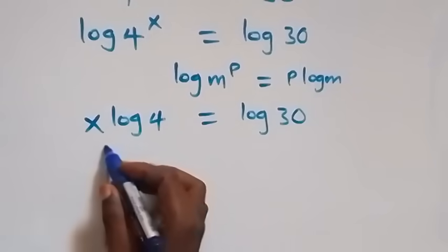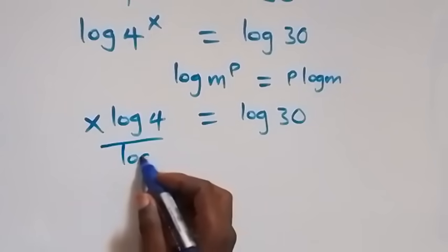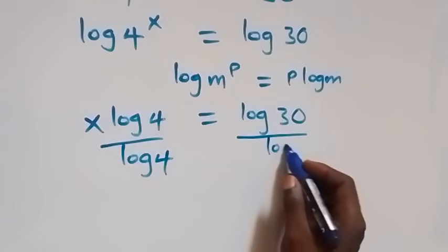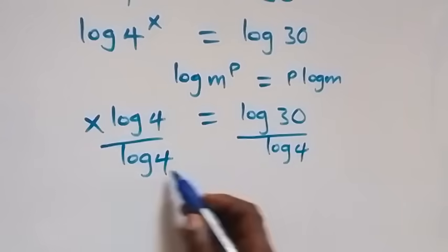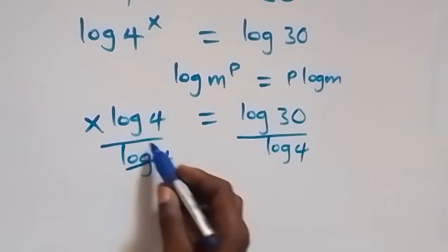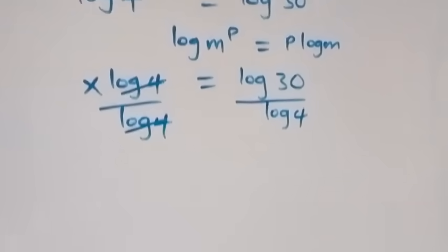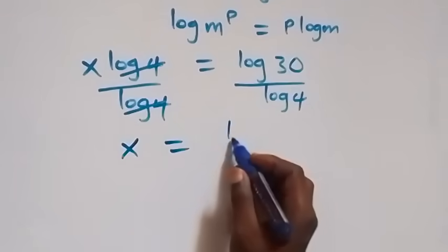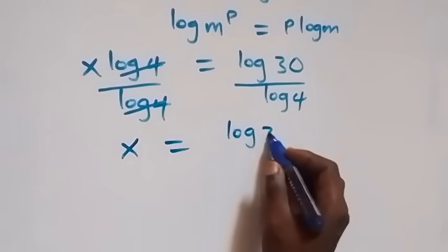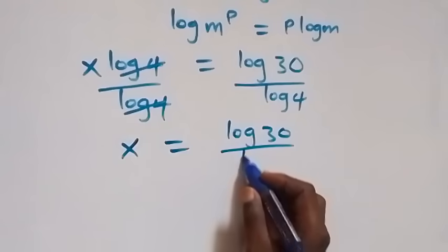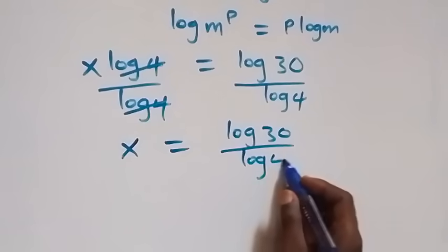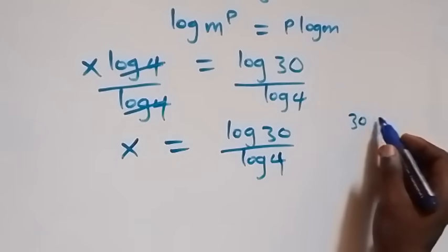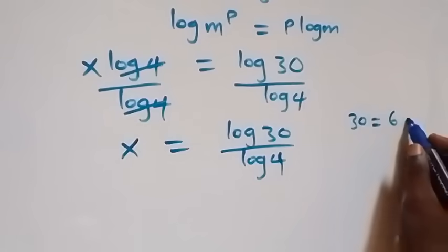The next step is to divide both sides by log 4. We divide this side by log 4 and also this side by log 4, which implies log 4 cancels, and we have x equals log 30 over log 4. We can reduce this further since 30 equals 6 times 5.